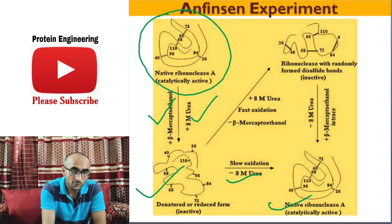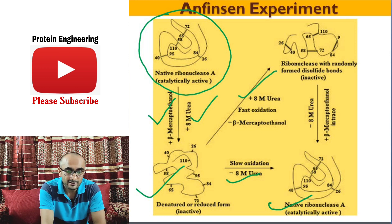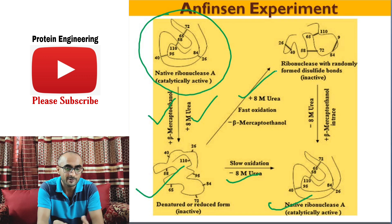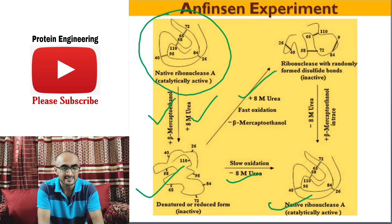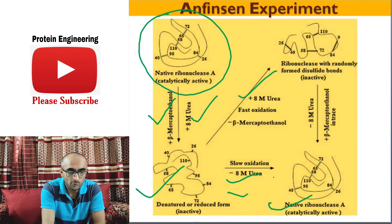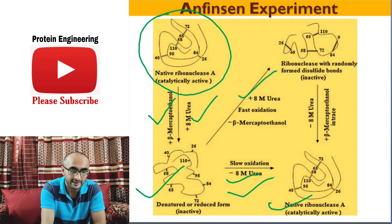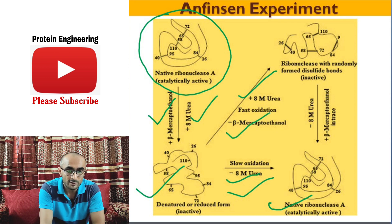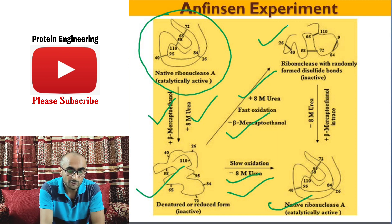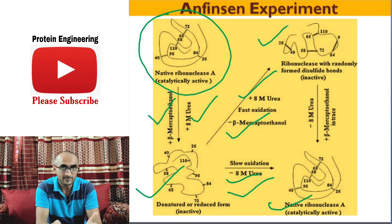But if 8 molar urea is still present and the protein undergoes fast oxidation — meaning beta-mercaptoethanol is completely removed — in this experiment the removal of beta-mercaptoethanol differed. In the first experiment, urea was removed before beta-mercaptoethanol, so complete activity was regained. In the second experiment, from the denatured state of RNase A, beta-mercaptoethanol was removed first while 8 molar urea was still present — and the protein was found to be inactive.